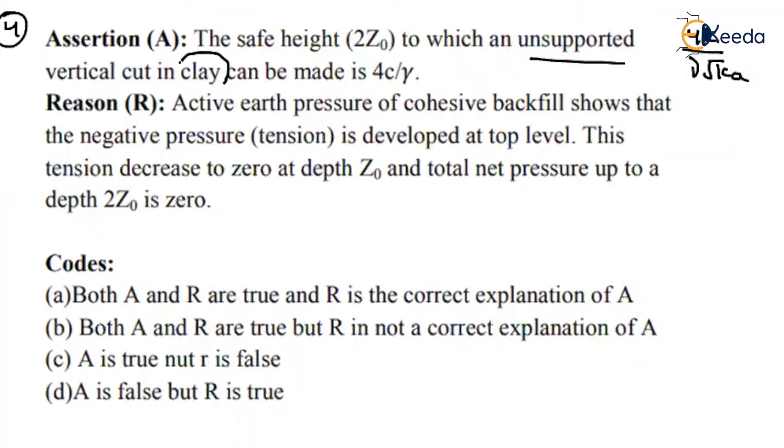They are asking about clay. If it is clay, what is the phi value? Phi value will be equal to 0. If phi equals 0, then what about the Ka value? 1. So what is the unsupported height? 4C by gamma. That means the assertion is okay, right?